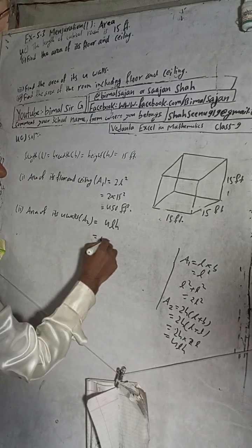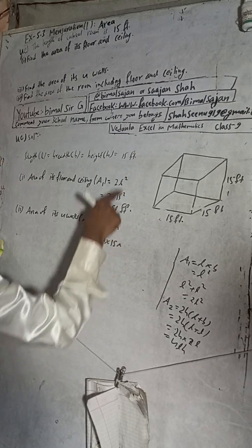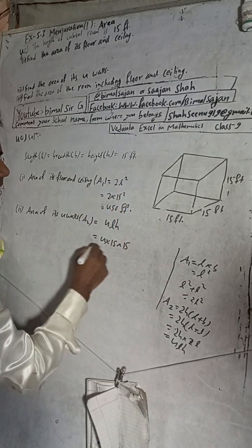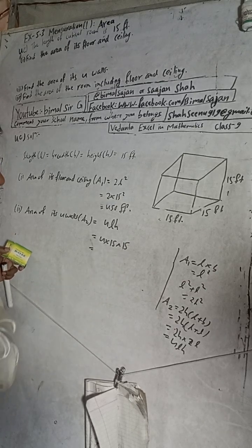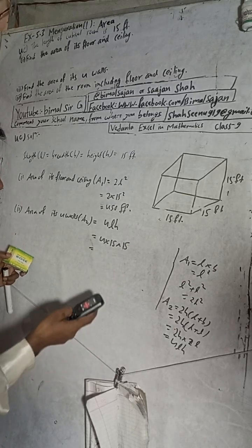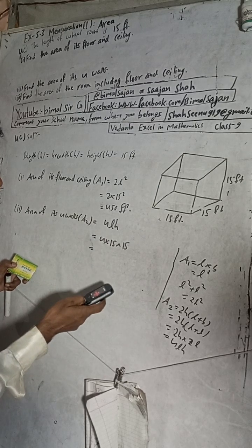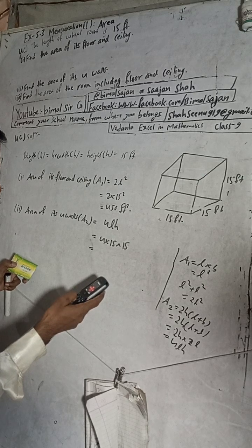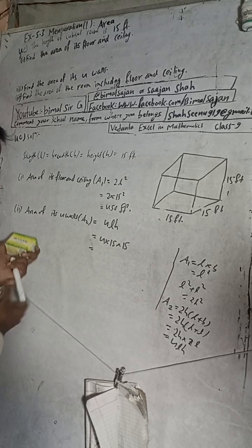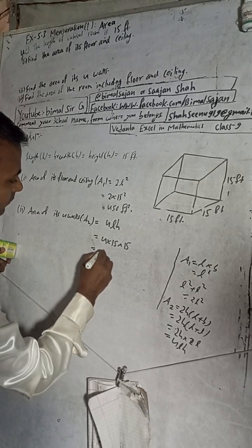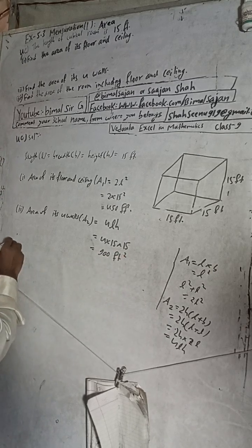So the formula is 4 into L into H. The value of L is 15 and the value of H is also 15. Therefore, 15 into 15 is 225, and 225 into 4 equals 900. So A2, the area of the four walls, is 900 square feet.